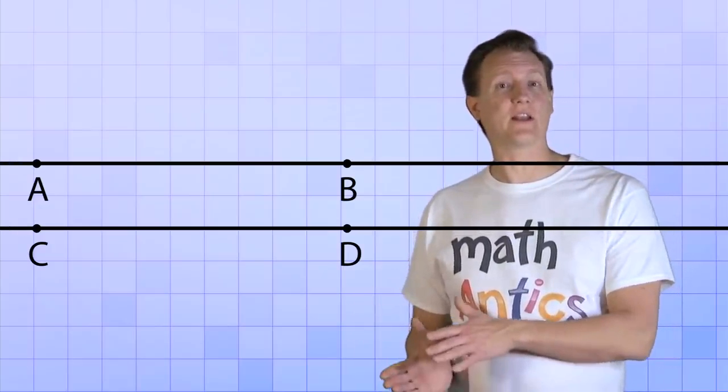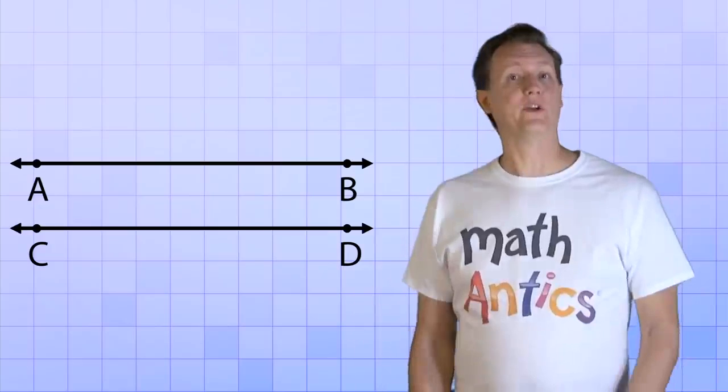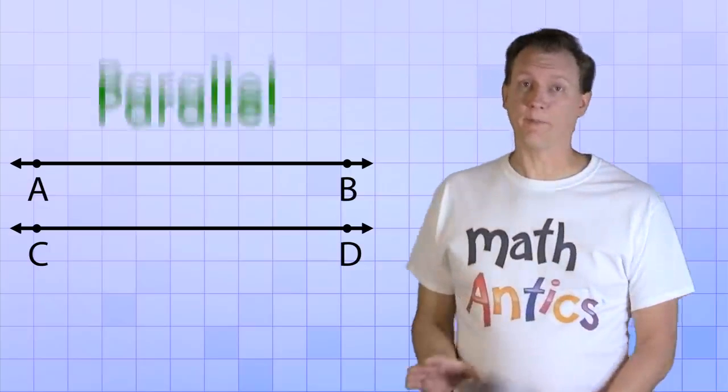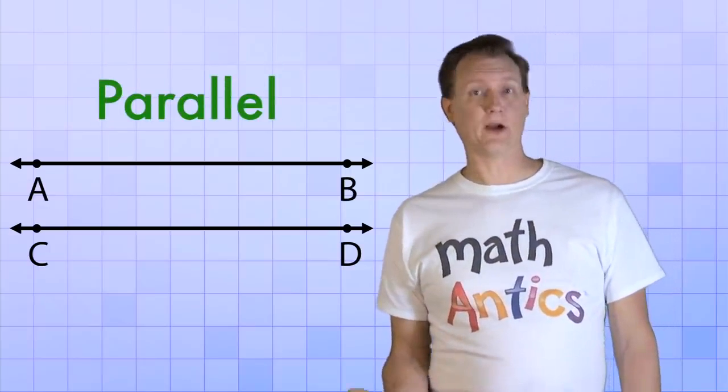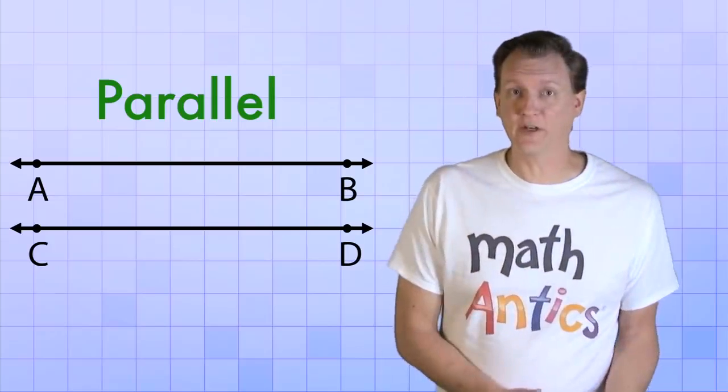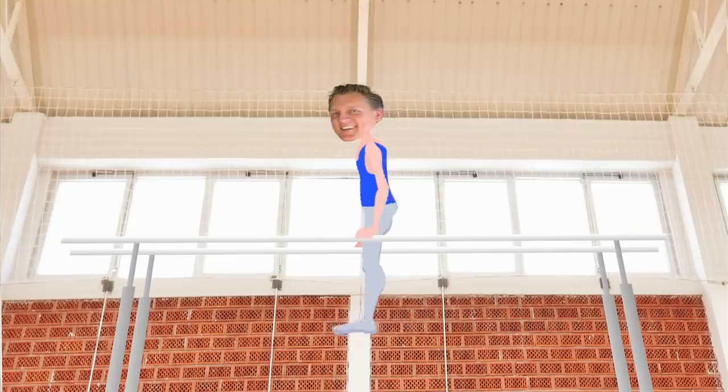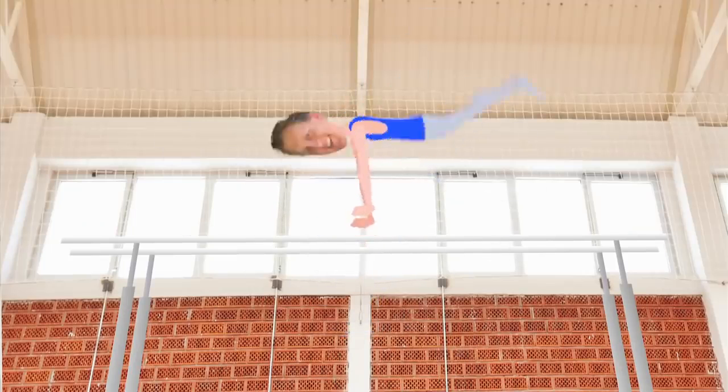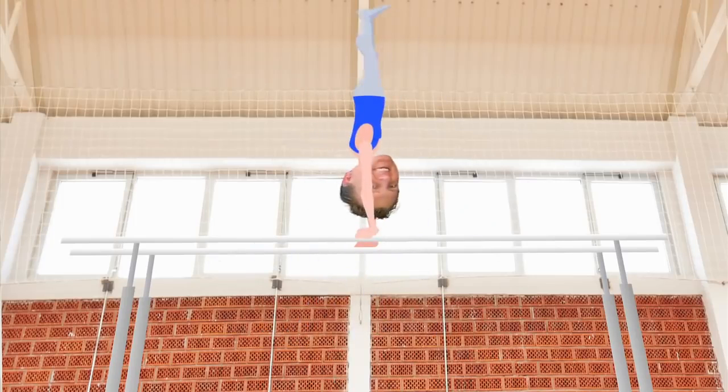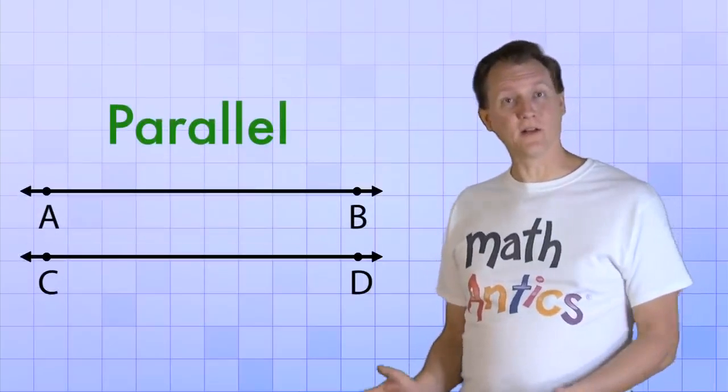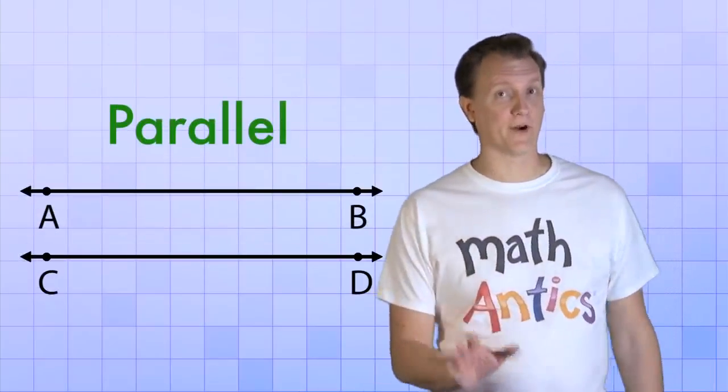they would never cross or even get closer together. When two lines are arranged like this, we call them parallel. Now, you've probably heard the term parallel before, like parallel parking or a parallel universe or parallel bars. Okay, so parallel lines are lines that will never cross, even if they go on forever.